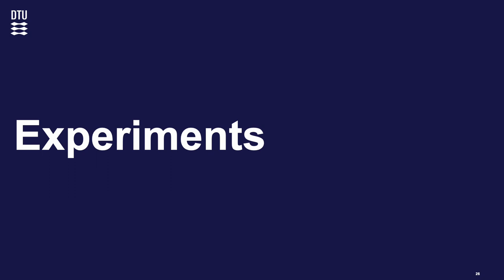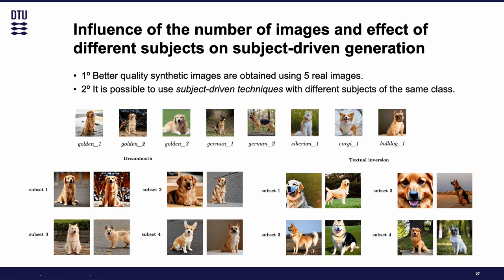Let's define the experiments and the results we have obtained to check how these methods work. First, we need to do some preliminary experiments to get to know the tools and methods. The first one checks the influence of the number of images. We found out that better quality synthetic images are obtained using five real images: using just one image is unfeasible, and if we use more than one image, the subjects may not be the same. Thus, we need to do a second experiment, in which we take the domain of dogs and incrementally use more and more different breeds.